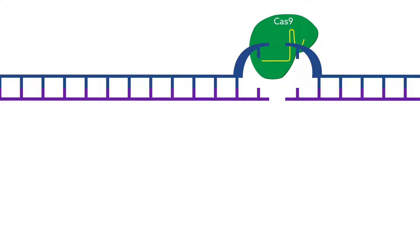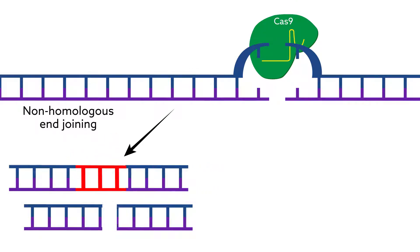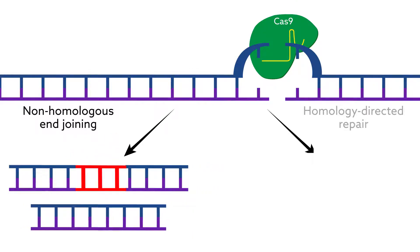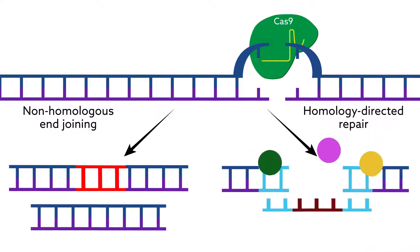Cellular repair mechanisms then kick into action, either in the form of non-homologous end joining, which causes unpredictable insertions or deletions, or with homology-directed repair, which uses a donor template to make a precise change.